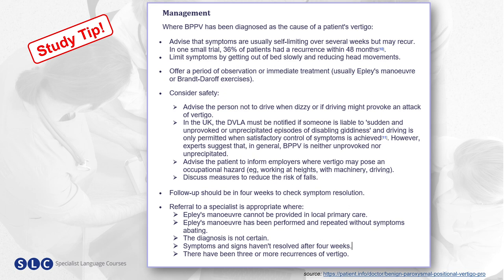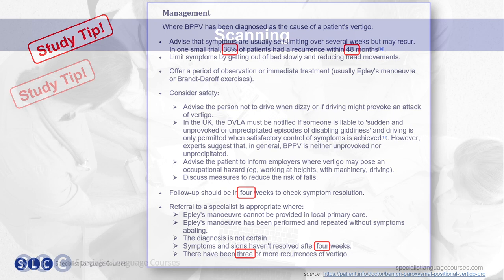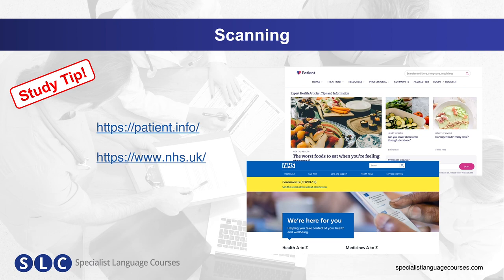Here is a text on the management of BPPV. One idea would be to scan for a particular word — for example, all the mentions of the word 'vertigo'. Think about using your finger or a pencil to help you scan, and underline or circle the words as you find them. Or you could scan for numbers, or scan pages on medical conditions for symptoms, causes, and treatments. Patient Info and the NHS website are good resources for these activities, but you can really use any text.